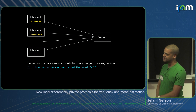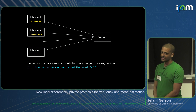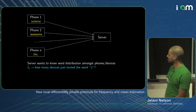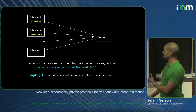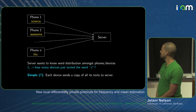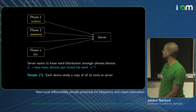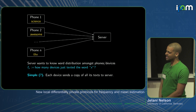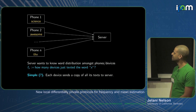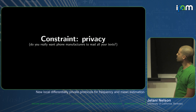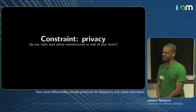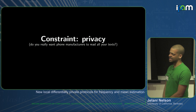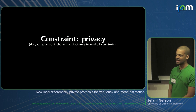F sub X is how many devices just texted the word X. Simply, each device sends a copy of all its text messages to the server, and the server knows everything and can answer questions like this. But there's a constraint: privacy. Do you really want whoever is designing these apps or making these phones to be able to read all your text messages? Probably not.